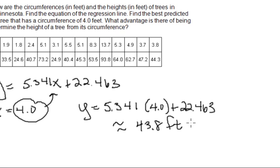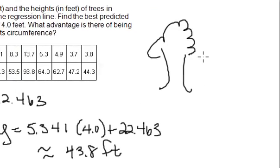Now the follow-up question is what advantage is there of being able to determine the height of a tree from its circumference? And if you just think about it, it makes sense. If this is our tree and we want to know how high the tree is, what you would ordinarily have to do is climb the tree using a ladder or use some type of equipment and find the height of the tree. But something that would be much easier is just simply measuring the circumference of the tree. So once you know the circumference, then you could drop it into the equation and then find the height without having to climb.